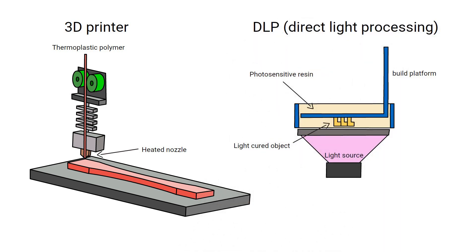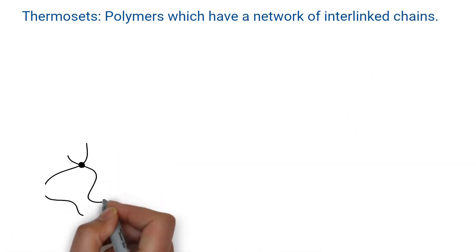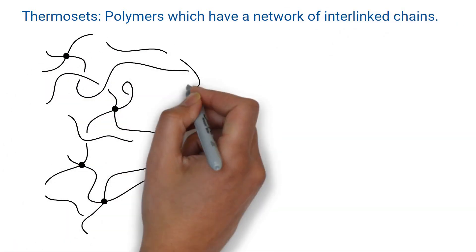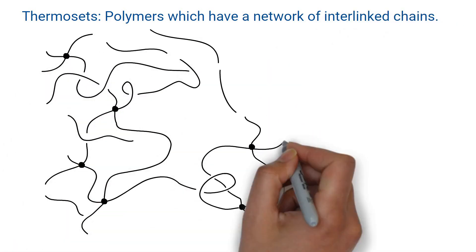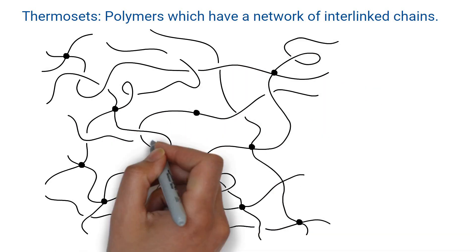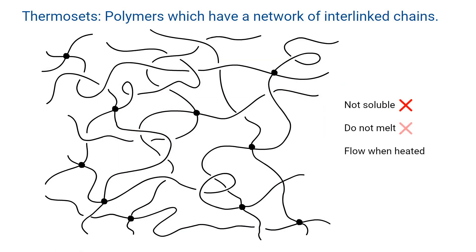When these photosensitive polymers cure, they tend to behave as a thermoset. Thermosets are polymers which have a network of interlinked chains. We refer to this interlinked network as being cured or cross-linked. These are typically not soluble and do not melt and flow when heated, like the paint on your car.